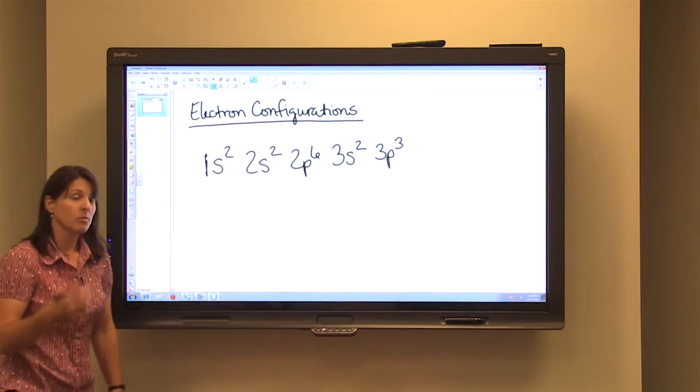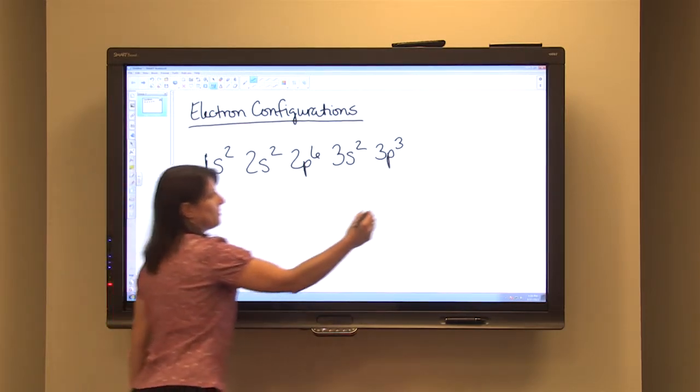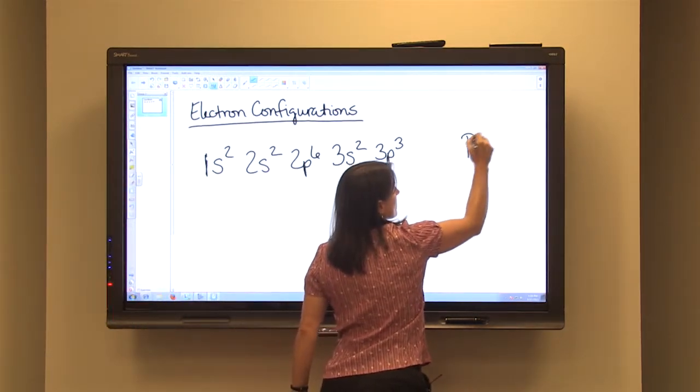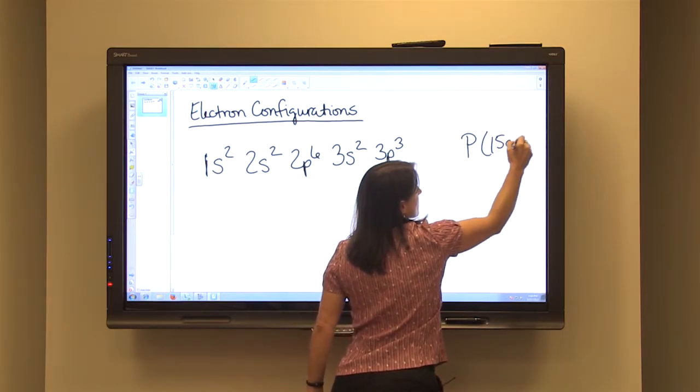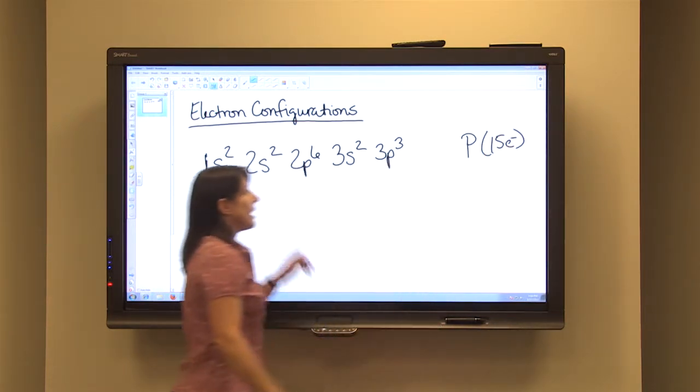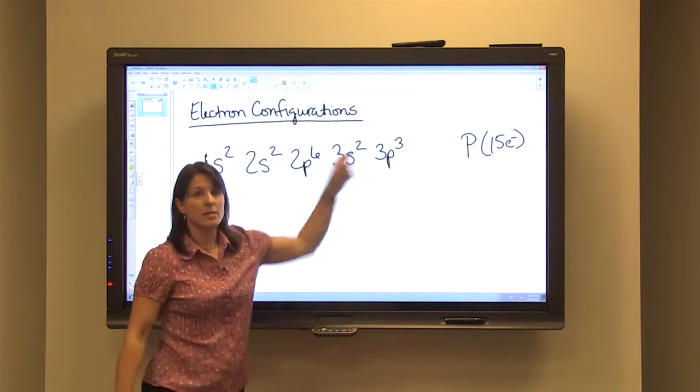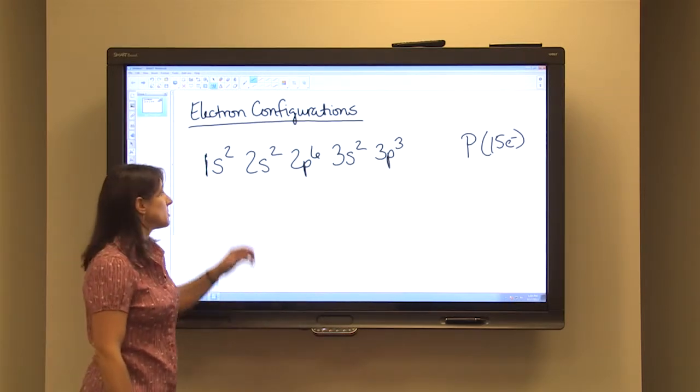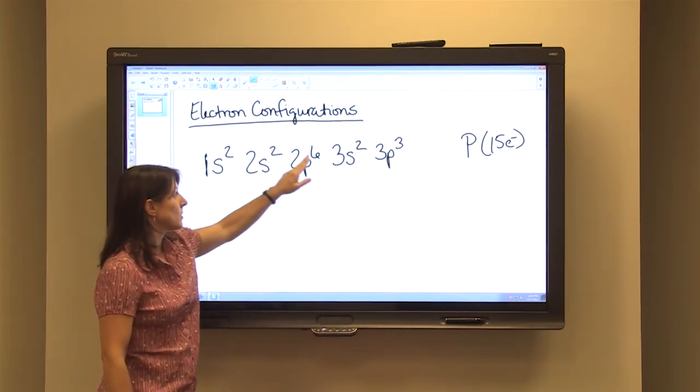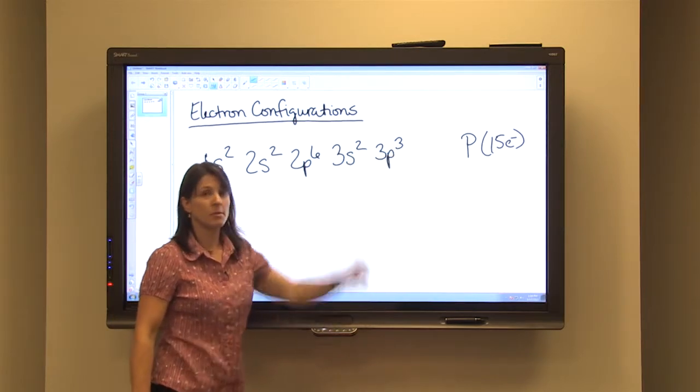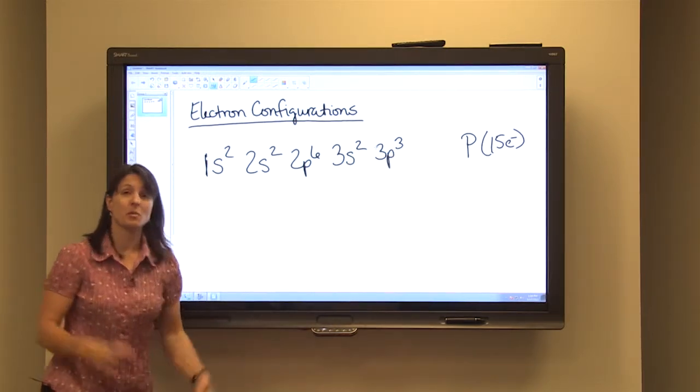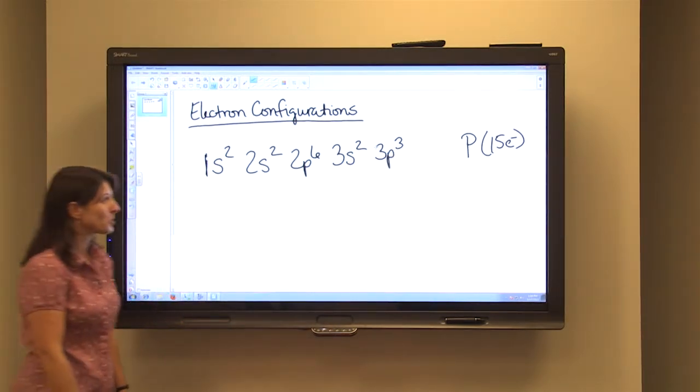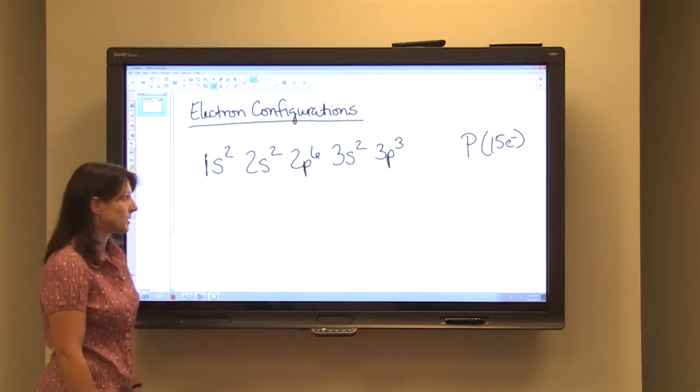To double-check yourself, remember phosphorus had a total of 15 electrons. Add up your superscripts, and they should equal your atomic number, which is 15. So 2, 4, 10, 12, 15. So that means that we must have the correct superscripts if it equaled our atomic number.